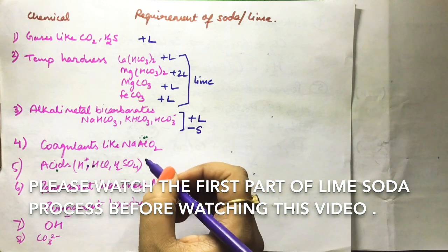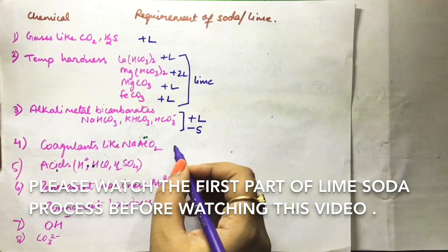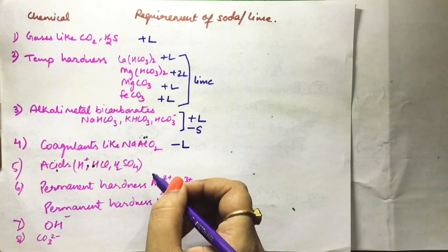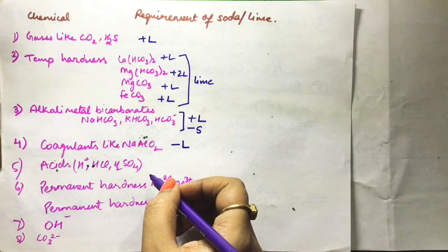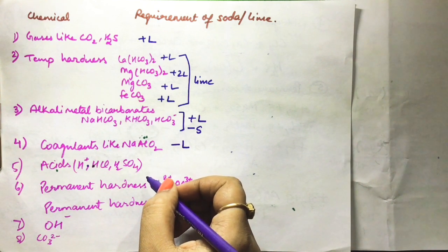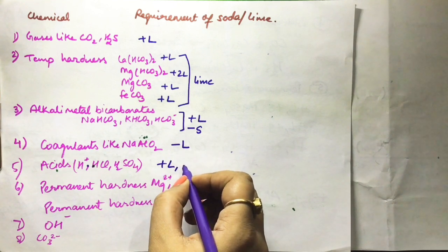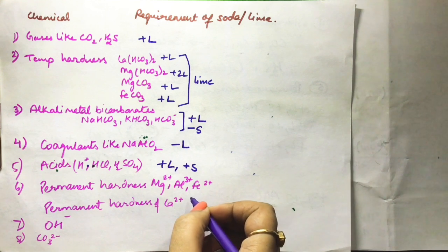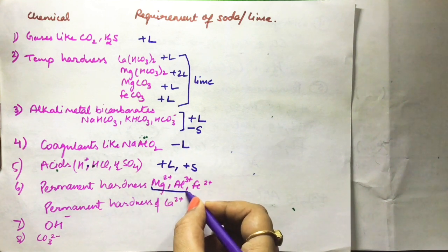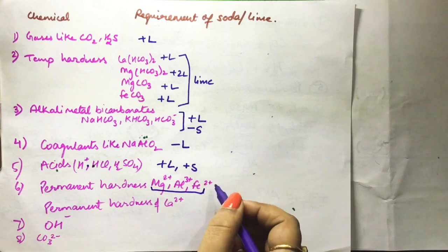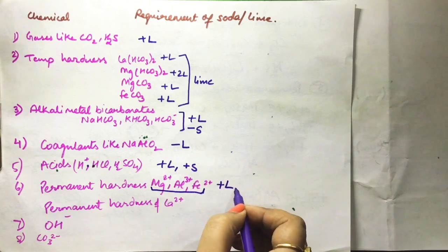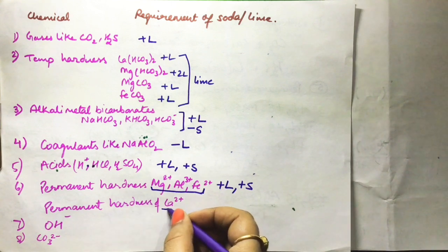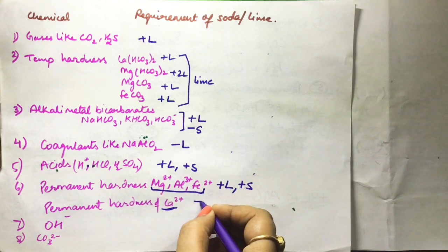NaAlO2 sodium aluminate coagulant — we have seen its reaction, lime is subtracted for acids; acids require plus lime and plus soda. Permanent hardness by magnesium, aluminum, and iron requires lime and soda. Permanent hardness of calcium requires only soda.